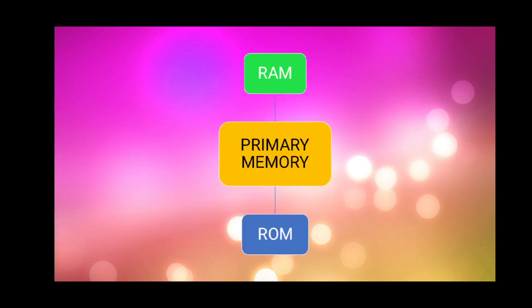Ab yeh jo primary memory hoti hai, iske bhi further two types hai: pahla hai RAM, second hai ROM. Ab aap log soch rahe honge primary memory kya tha? Main memory. Jab computer hum start karte hai, to sabse pahle data kis mein jaata hai? Main memory mein.